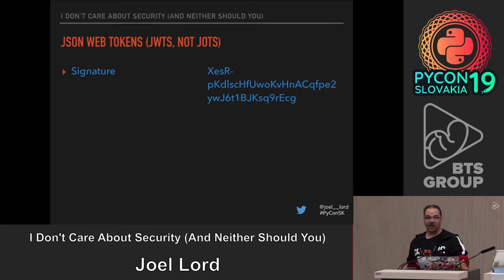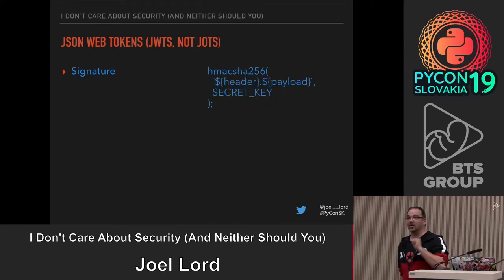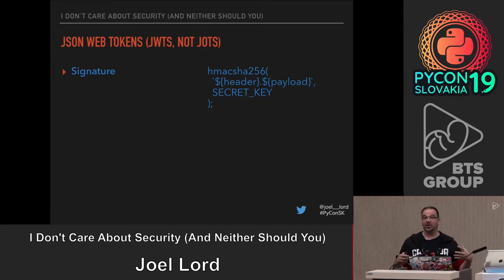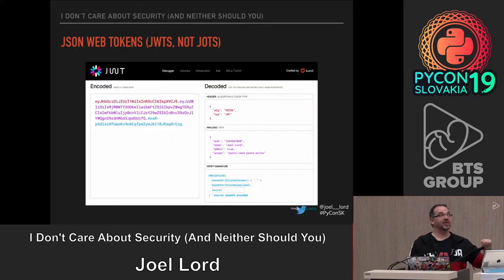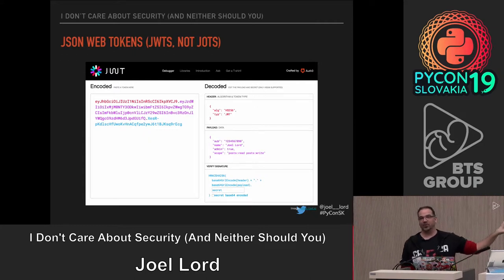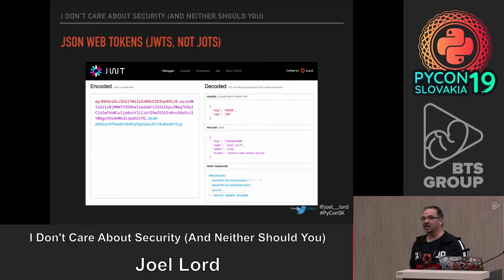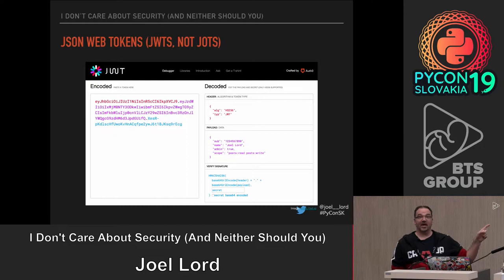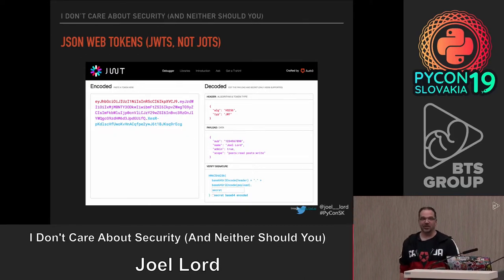The signature uses the header and payload to generate a signature — that's what ensures nobody has been able to tamper with the token. If you need to play with JSON Web Tokens, jwt.io is a great resource — just paste in your JWT and you see all the information in it. Note that the information is not encrypted, so never put sensitive information in your JSON Web Tokens.